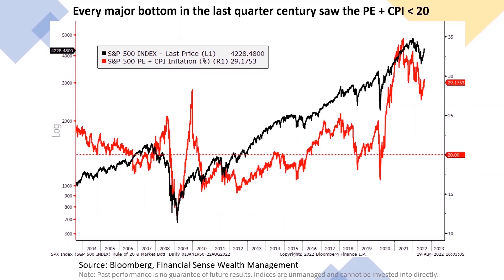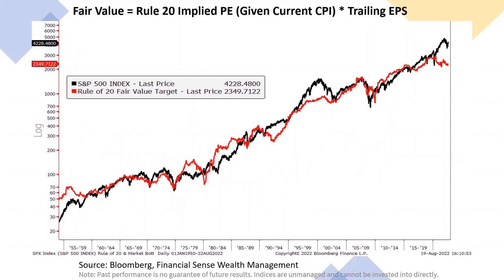When you look at today, we're at 29, which means the P/E needs to come down, or inflation needs to come down, or both. At the current 8.5% inflation rate, the P/E is way too high. This gives you an idea that it could be — and would likely be — premature to say the coast is clear and the bottom is in. Using the Rule of 20 to come up with a fair value for the S&P, I took the inflation rate to get the implied P/E times trailing earnings per share to get the price target. Currently, we are well above the estimated price target for the S&P of $2,349.